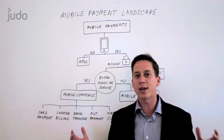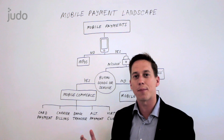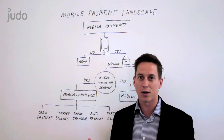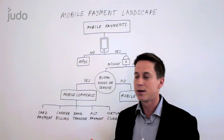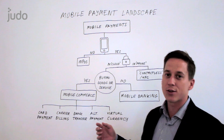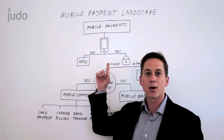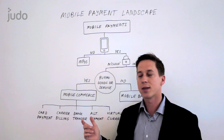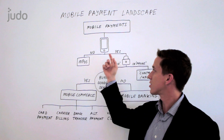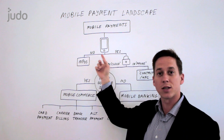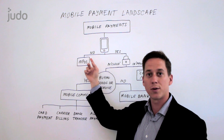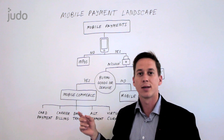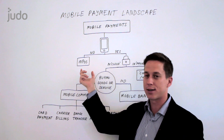So let's break this down and think about what happens with a mobile payment. The first question to ask yourself is: are we using the consumer's phone or not? If the answer is no, you are not using the consumer's phone — this is mobile point of sale, and I'll come back to that in a second.